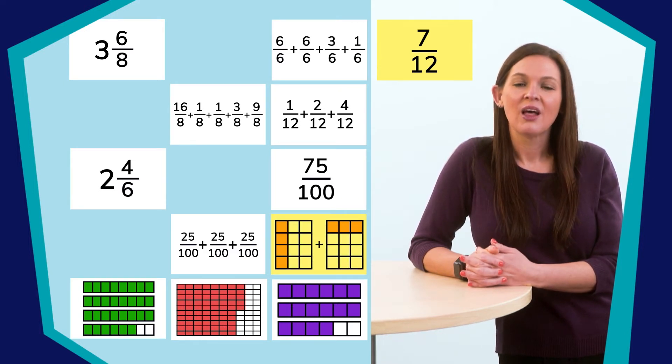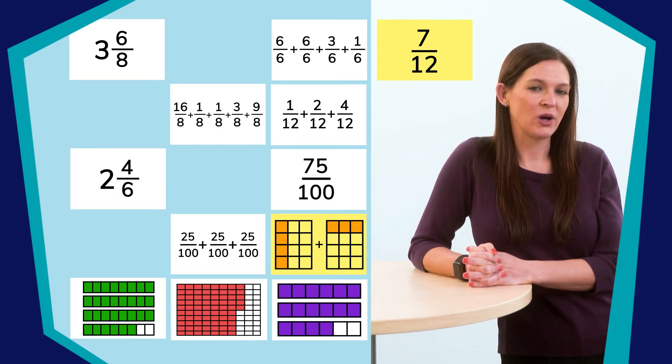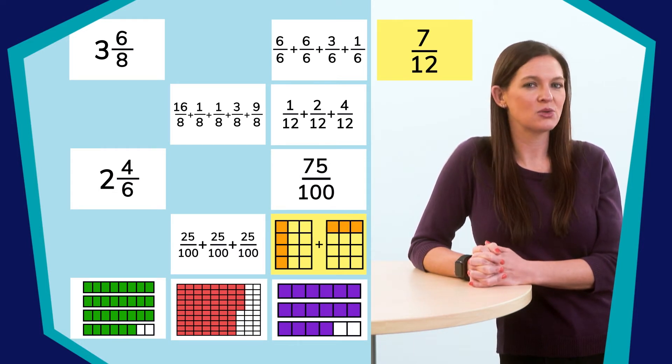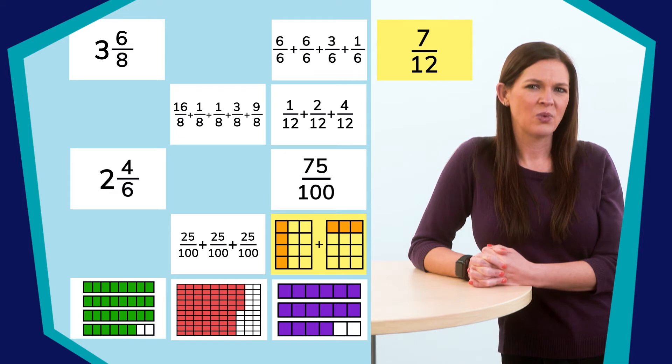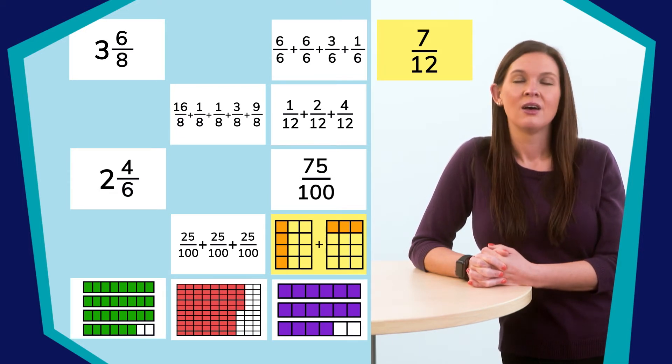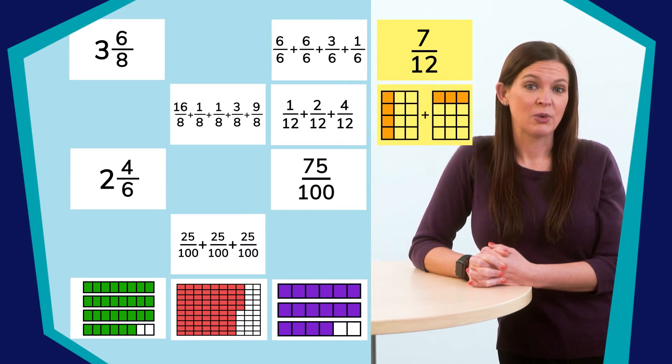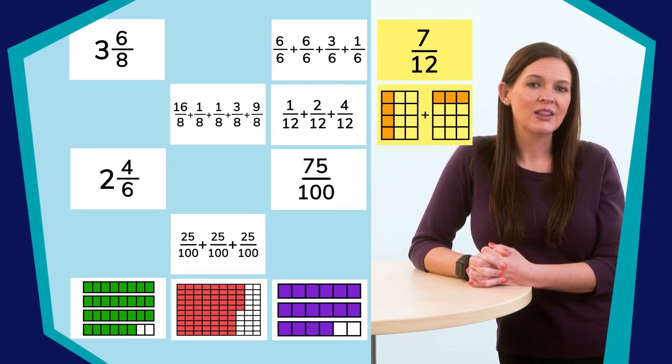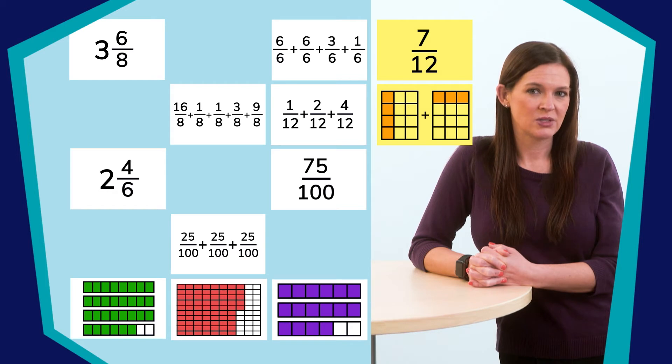This one was tricky. The model broke down 7 twelfths into 4 twelfths plus 3 twelfths, but when I add them together, it's still 7 twelfths. Erin is going to be so pleased that we put this back together for her. Now, let's find the expression that matches 7 twelfths.